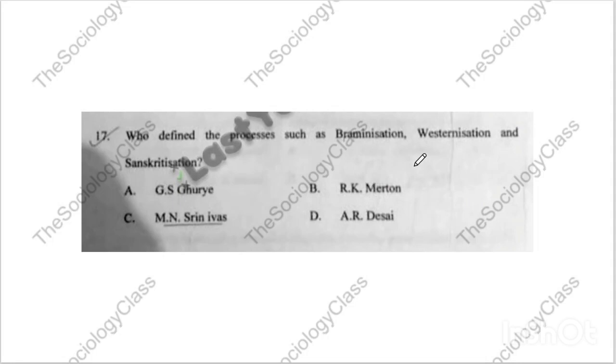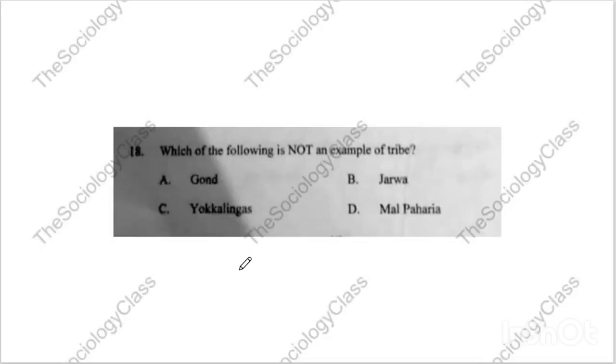Question number seventeen: 'Who defined processes such as Brahmanization, Westernization, and Sanskritization?' This is a repeated question. The correct answer is M.N. Srinivas — he gave all three of these concepts.